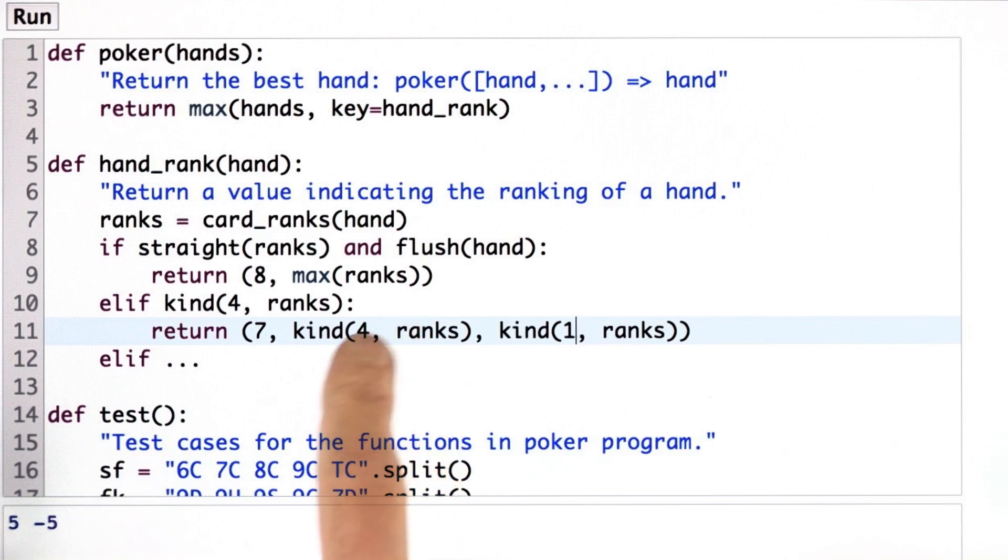And you can do that in Python. In other languages, you would have to decide one or another. In a language like Java, you couldn't have something that returns either a Boolean value or a number, so you'd have to have another way of dealing with that. But in Python, you can do that. You can have kind return a number when it's needed and return a false value when it's needed.